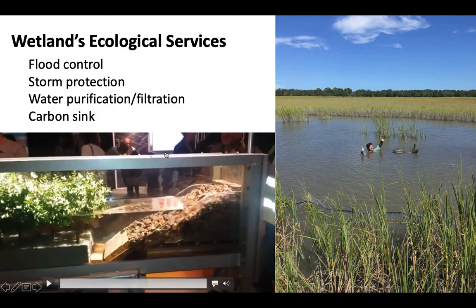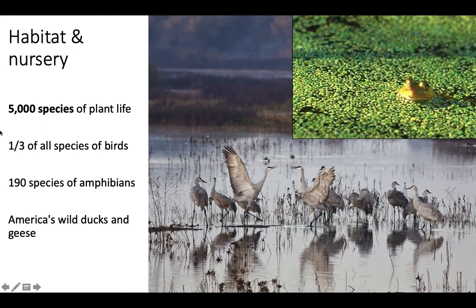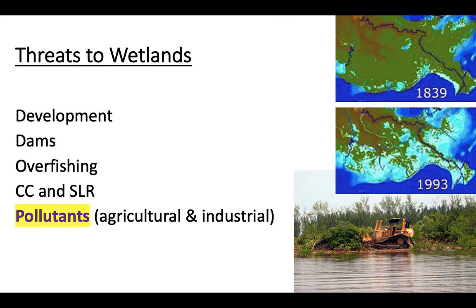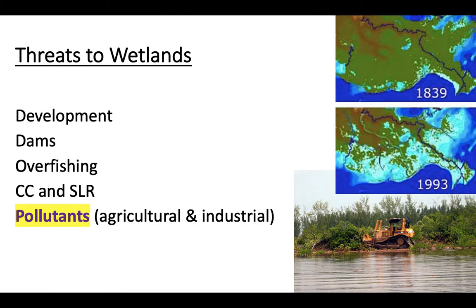Wetlands also purify and filter water and serve as massive carbon sinks — all that salt marsh grass sucks up CO2 and stores it in roots and soil. A third of all bird species nest in wetlands. Unfortunately, wetlands face significant threats: human development, dam construction altering watersheds, overfishing, trophic cascades, climate change, and sea level rise. Many wetlands are very flat and low, so even slight sea level rise can flood entire wetland areas, drowning out species. Agricultural and industrial pollutants are also major threats.